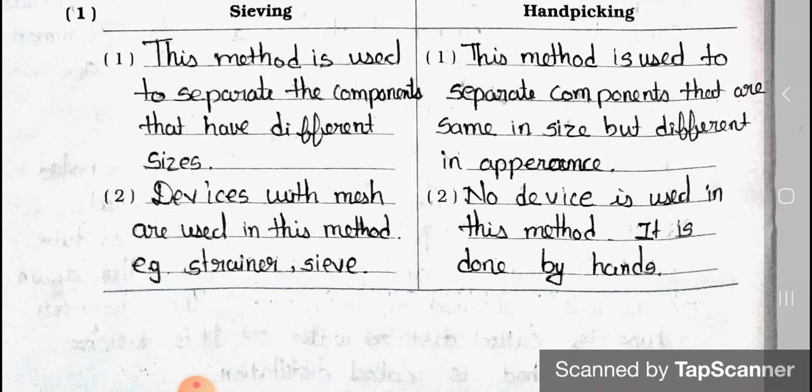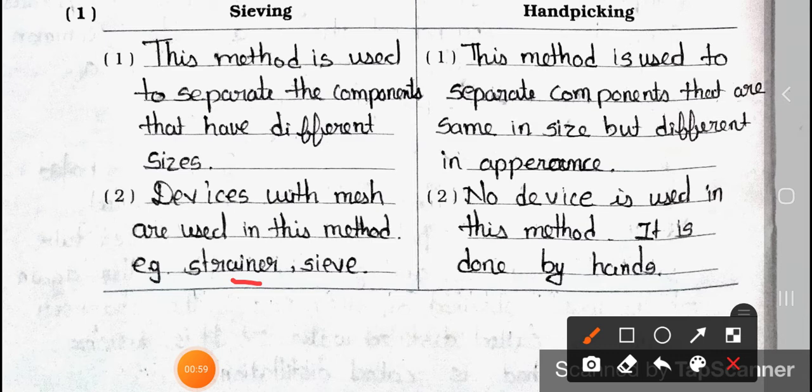Now see point 2. Devices with mesh are used in this method. Example: strainer and sieve. And in handpicking, no device is used in this method. It is done by hands. So its name is handpicking.